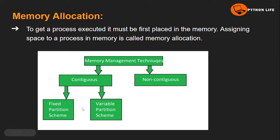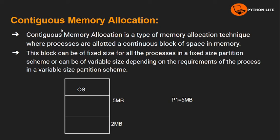Contiguous memory allocation is divided into two types: fixed size partition and variable size partition. Contiguous memory allocation is a type of memory allocation technique where processes are allotted a continuous block of space in memory.